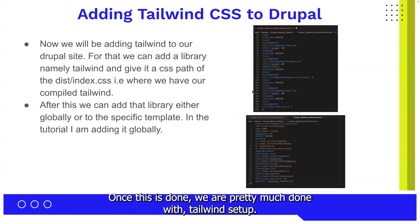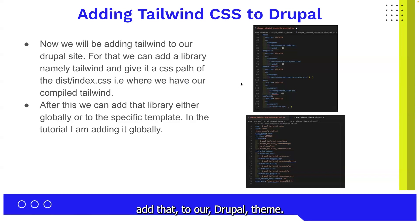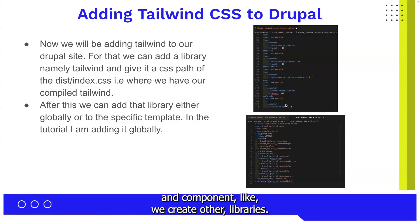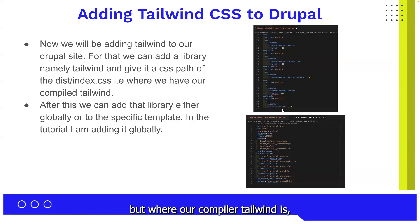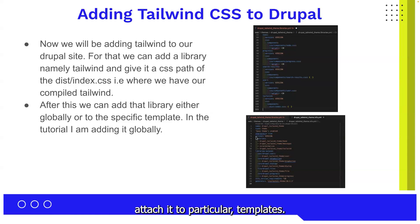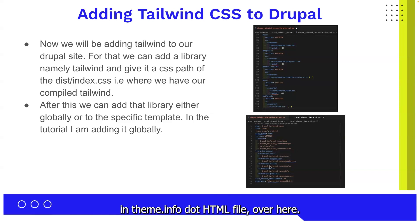Once the Tailwind setup is done, we want to add it to our Drupal theme. We will create a library named tailwind — specifying version, CSS, and component as we do with other libraries. Here we add the destination path where our compiled Tailwind CSS resides, not the source one with the directives. Once we add this, we need to attach this library either globally or to particular templates. In this example, I'm adding it globally in the theme.info.yml file.